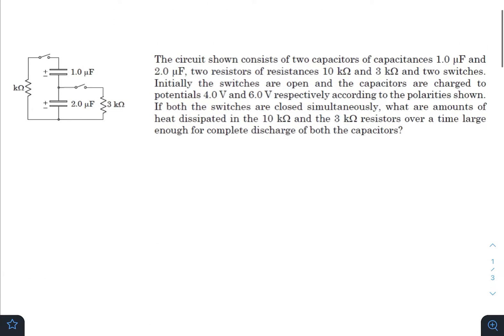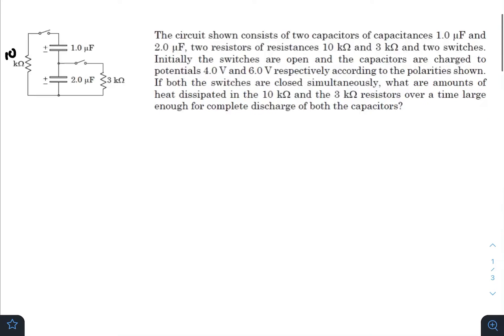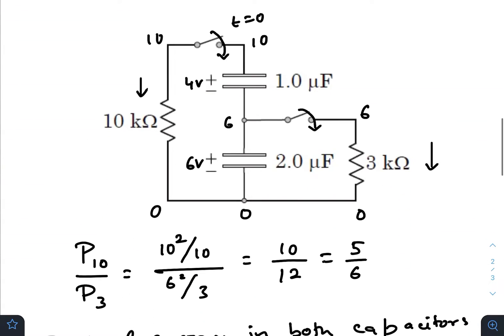So this 44 microjoules, some part of it will be dissipated in the 10k resistance here, and some part of it will be dissipated in this 3k resistance. Let us draw the circuit once again.